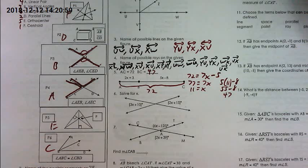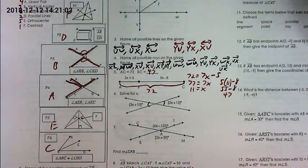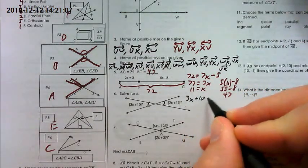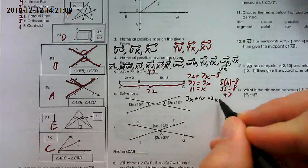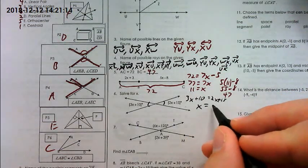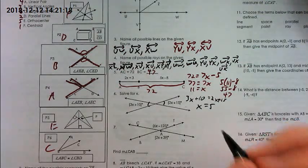On number six, solve for X. This one gave you two vertical angles. The vertical angles must be congruent so you can set them equal. 3X plus 10 equals 2X plus 15. Subtract the 2X from this side, subtract the 10 from the other side, and you're left with X equals 5.